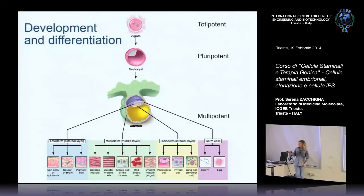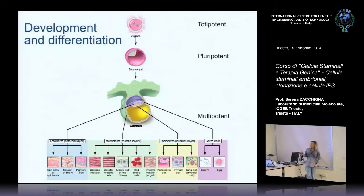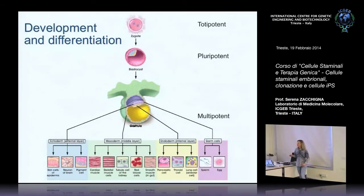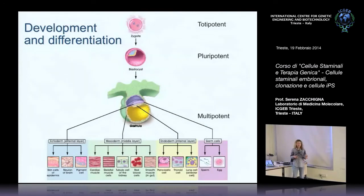Il mesoderma dà origine a tutto il muscolo, tutto l'osso, le cellule del sangue, e alcune parti del rene. L'ectoderma invece dà origine all'epitelio, quindi pelle ed epidermide, ma anche a tutte le strutture neuronali e molte cellule pigmentate che stanno sparse nell'organismo.